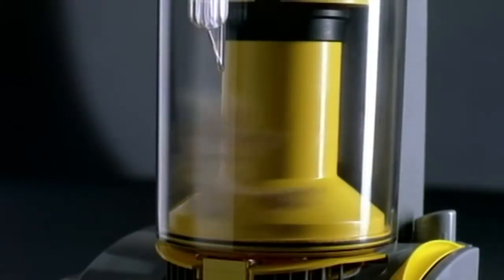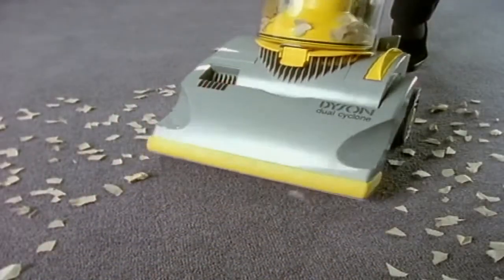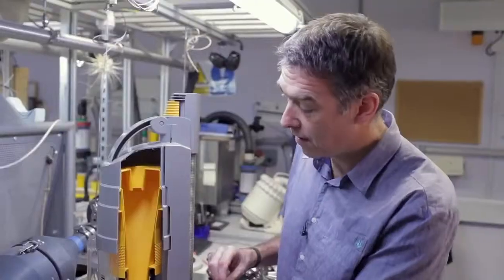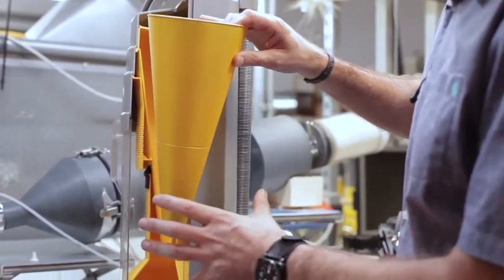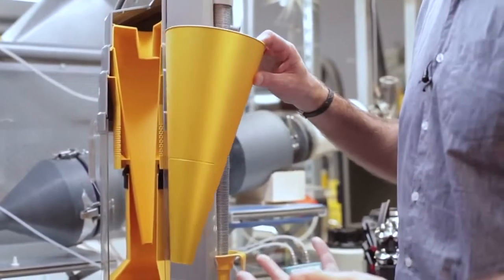When James Dyson invented the dual cyclone vacuum cleaner 25 years ago, he developed a system that had an outer bin that separated the large debris and then the fine dust went into a single, large, very efficient cone that sits in the heart of the cyclone pack.